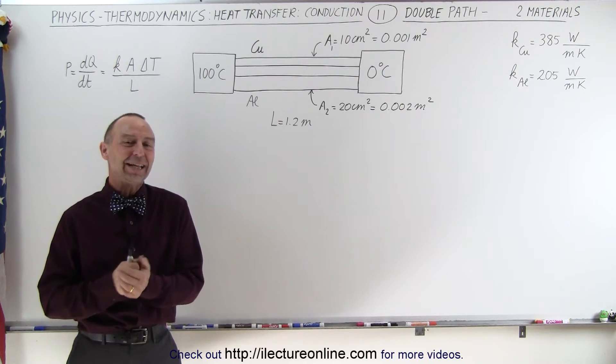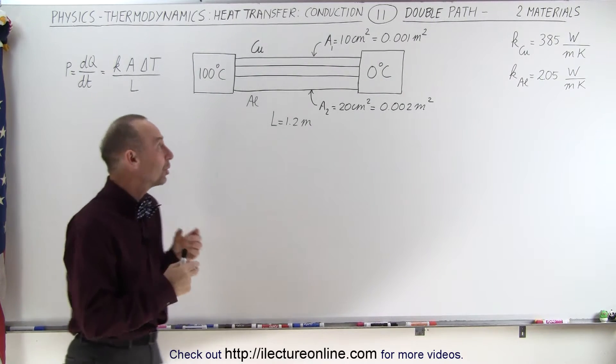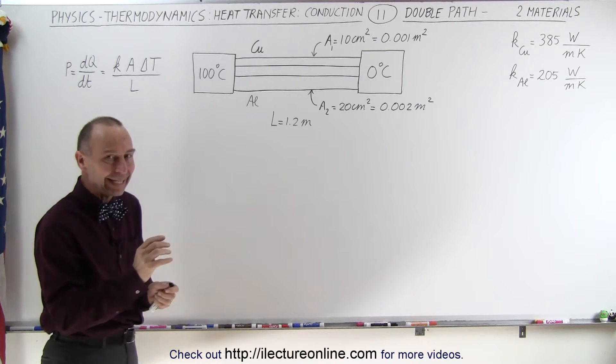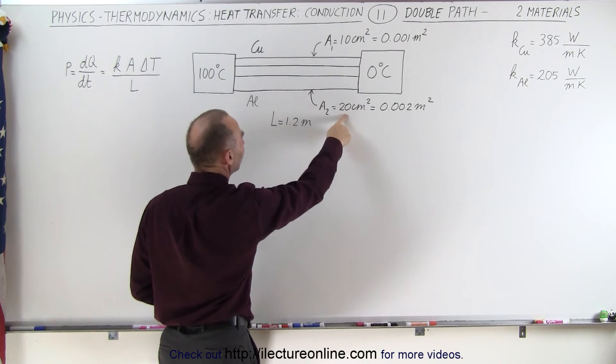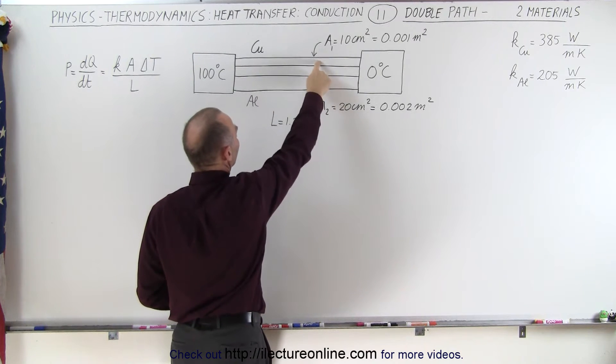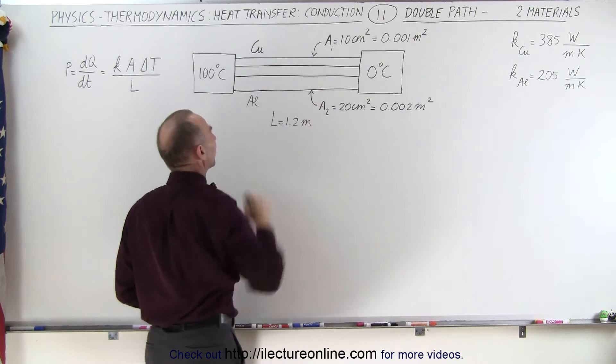Welcome to our lecture online. Our next example is one with two conducting paths, but one is larger than the other. It has a greater cross-section. This is 20 square centimeters. We've added on 10 square centimeters, and they're made of different materials.